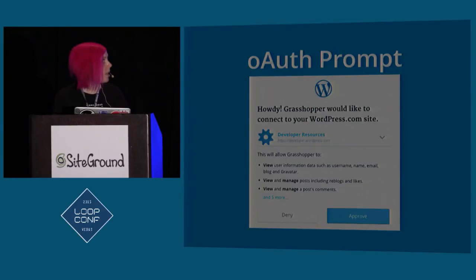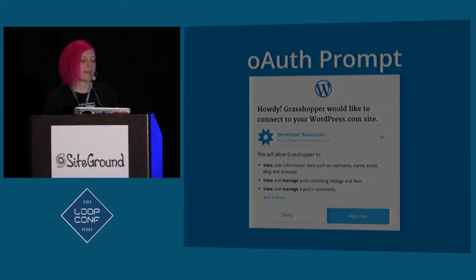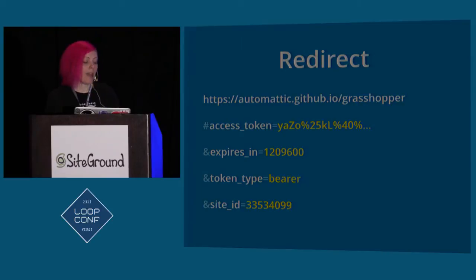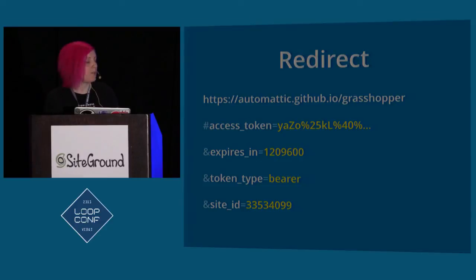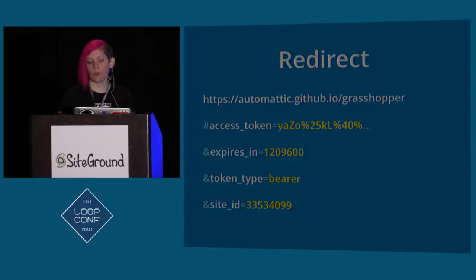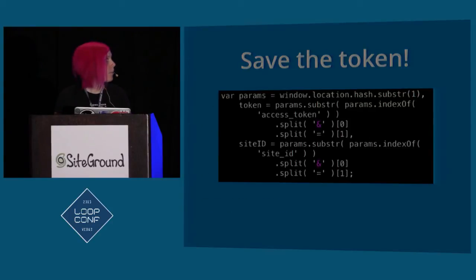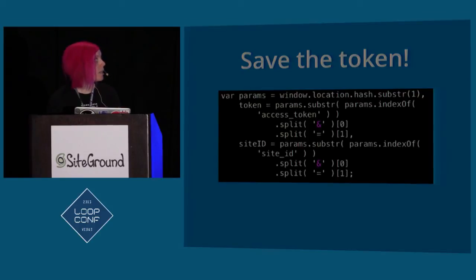The user's going to click on that link and then they see our OAuth prompt. They get to choose which site to connect to — you can also request access to all sites or specify one in that link. Once the API authenticates, it'll redirect back to that redirect URL, and you'll see it adds an access token on the end, which is just a string of characters plus a little bit of metadata about the token you've received. What you do with that is store it and then use it for any future requests to the API. This is just vanilla JavaScript to extract the token and the site ID back from the URL.